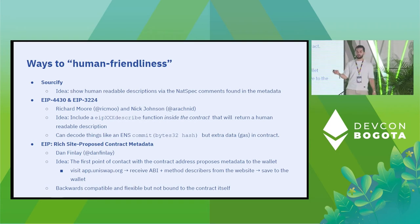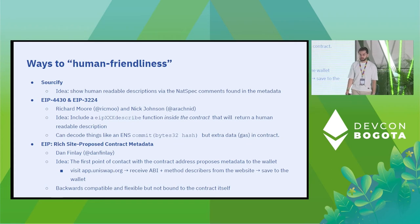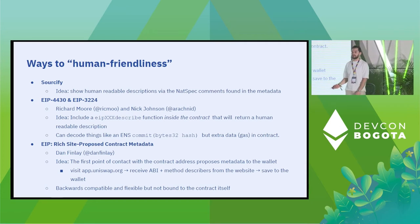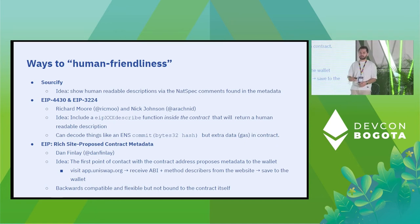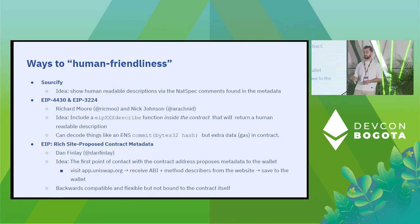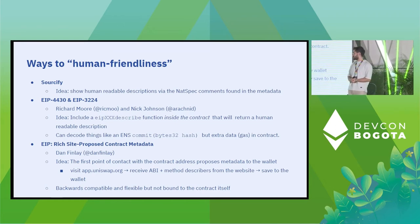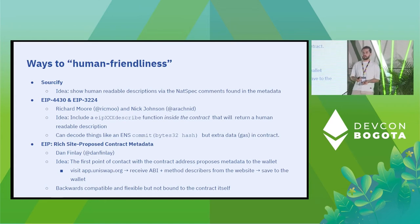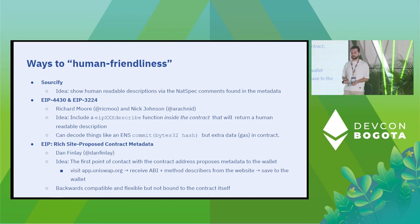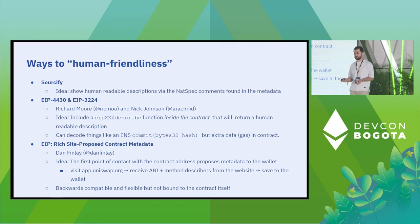Another EIP proposal by Dan Finley gives the user information at the first point of contact — say you want to do an exchange for the first time at Uniswap. Uniswap will give you the contract metadata, your wallet will store it, and then your wallet will have the ABI and the describers to show something more human-readable. The advantage is it's backwards compatible, so we don't need to change existing contracts. But at the same time this means it's mutable — it can be changed — so it's a trade-off.